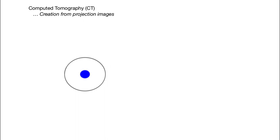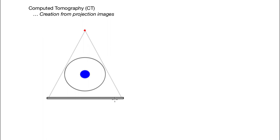It starts by acquiring a projection image. You have an X-ray source up here and an imager down here. Here I'm drawing it in one dimension, but this would be two dimensions stretching in and out of the page. Then you acquire this image.